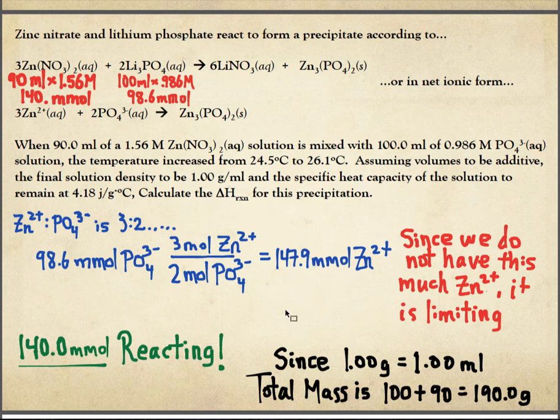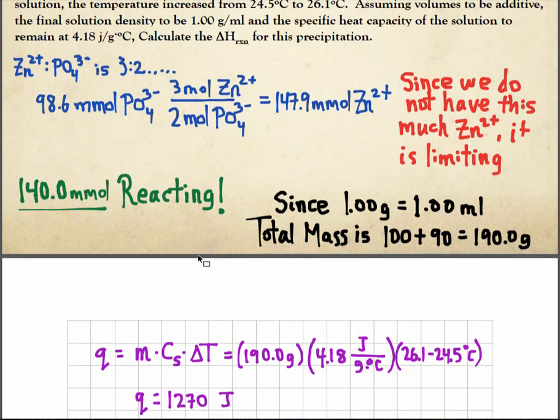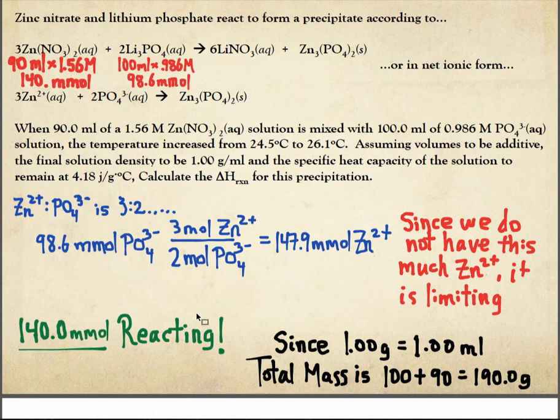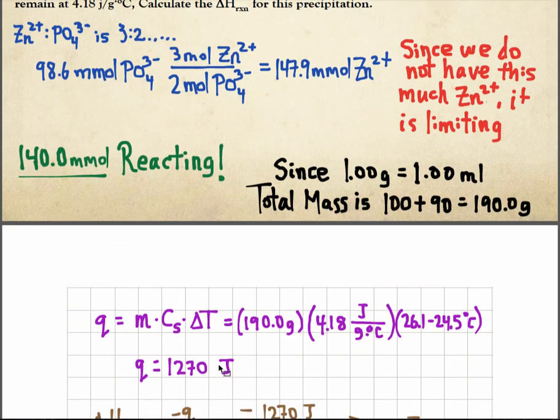In other words, 140 millimoles are limiting. So, also making note here that 1 gram of water is 1 milliliter of water, and the total mass is probably 190 grams. The zinc is limiting, so, they told me the temperature change, the specific heat, and the total mass. So, I got that. I got it with a positive number, but I know it's exothermic.